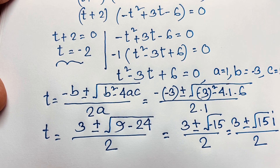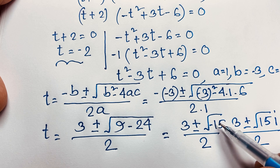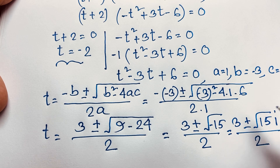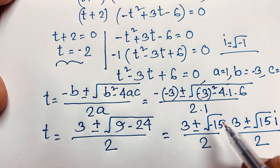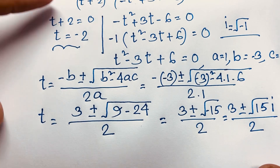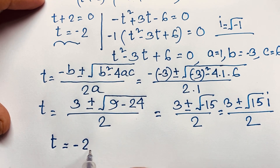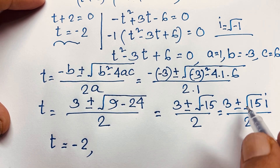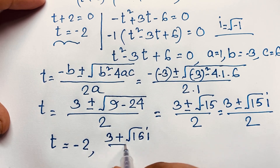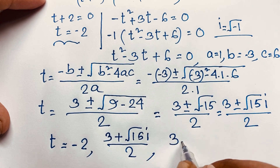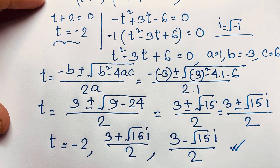So it will be 3 plus or minus square root 15i over 2. This is a complex number, since square root of negative 15 equals square root of 15 times square root of negative 1, and we know i equals square root of negative 1. Our three solutions are: the real solution t equals negative 2, and two complex solutions: t equals 3 plus square root 15 i over 2, and t equals 3 minus square root 15 i over 2.